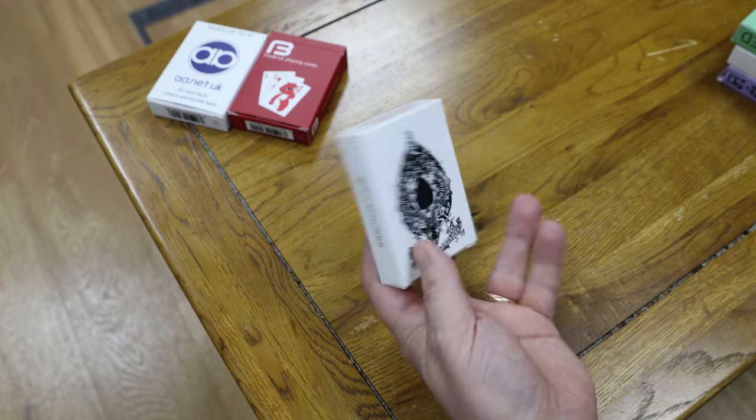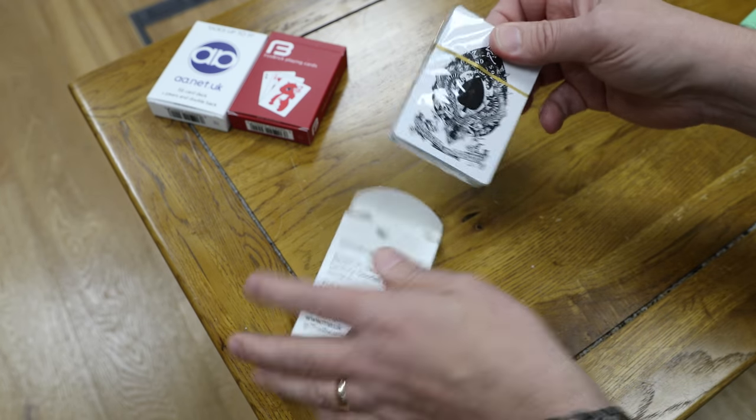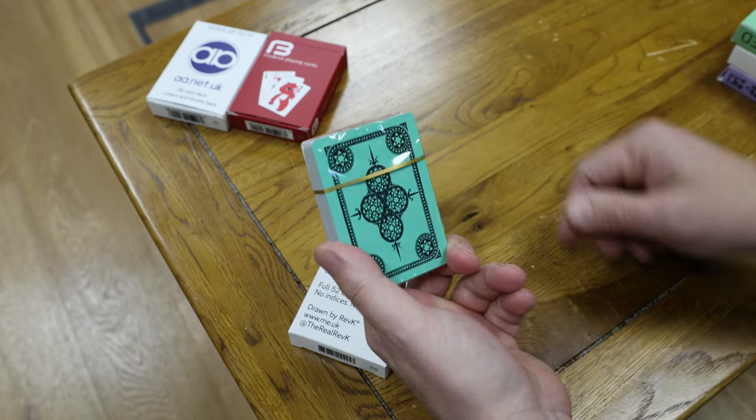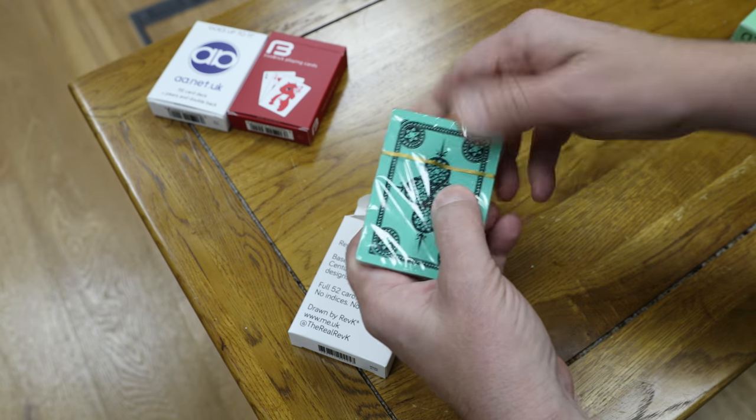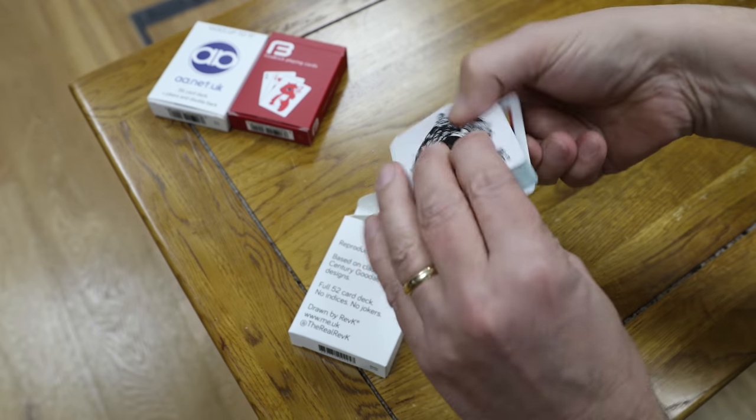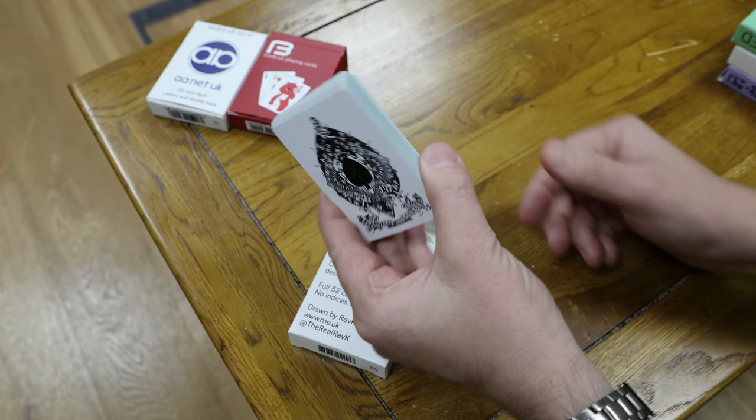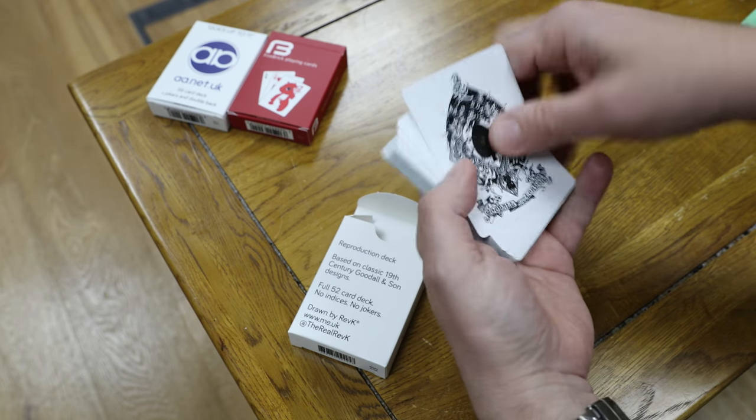We then go on to this deck, which is the reproduction 19th-century deck. This is based on a 150-year-old deck of cards. All of the packs come like this—obviously the others have been opened before. You find a little tear and you can open them nicely. This is a scan of the original back, and this is a scan of the ace of spades. The rest of the cards have been carefully redrawn.